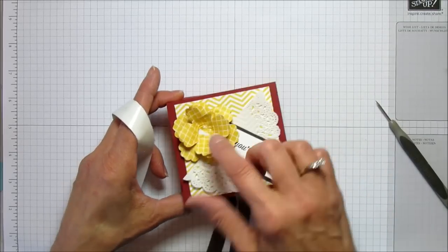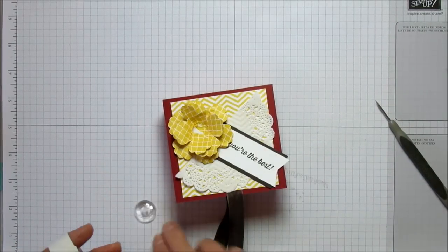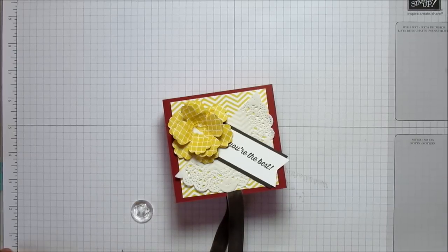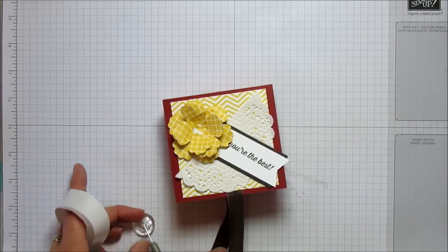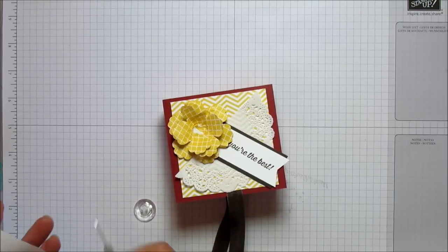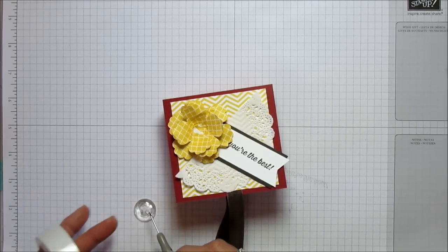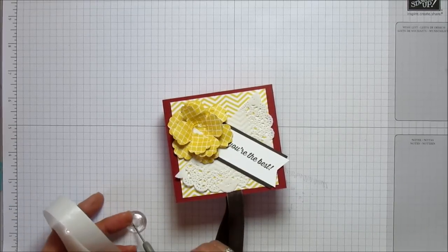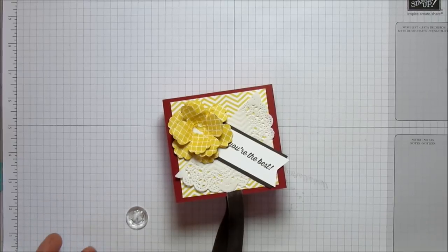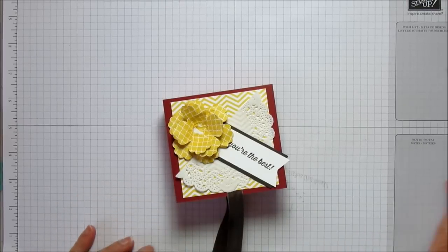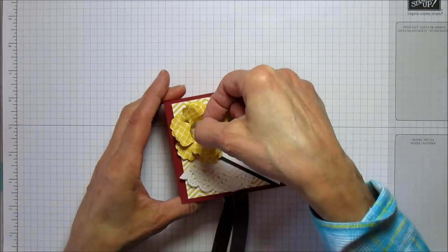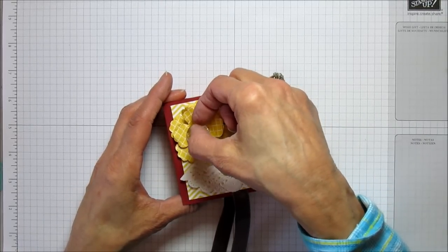Let's put that right there. Put more glue dots on the back of your button. Again, be generous. I have glue dots everywhere today - they've been sticking to me all over the place. We're going to attach our button to the center.